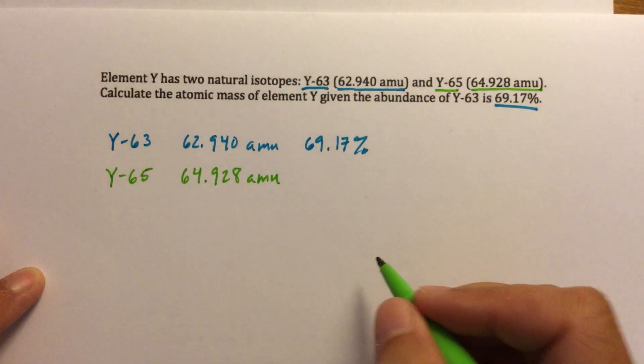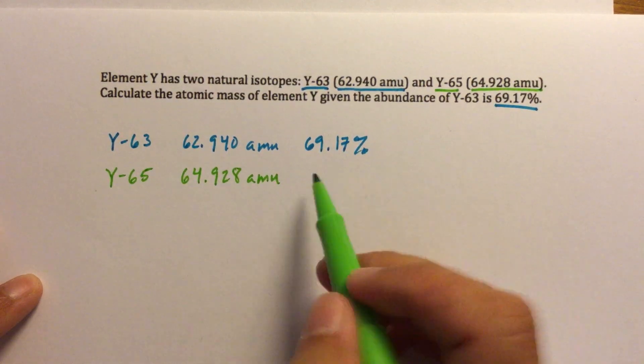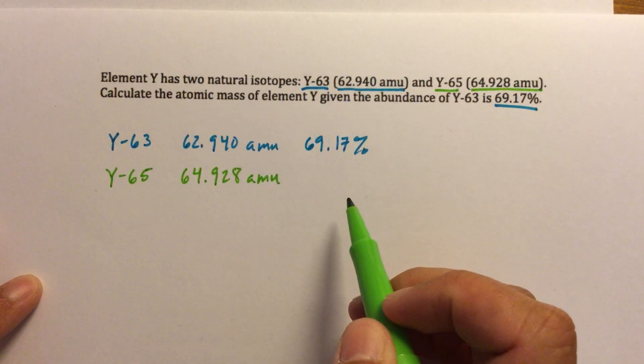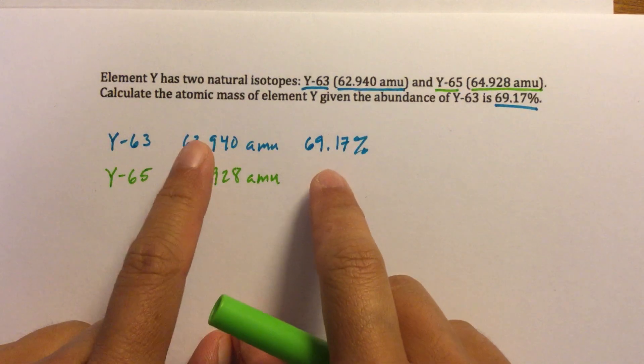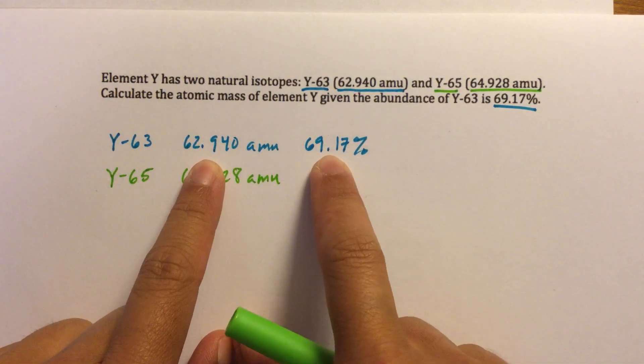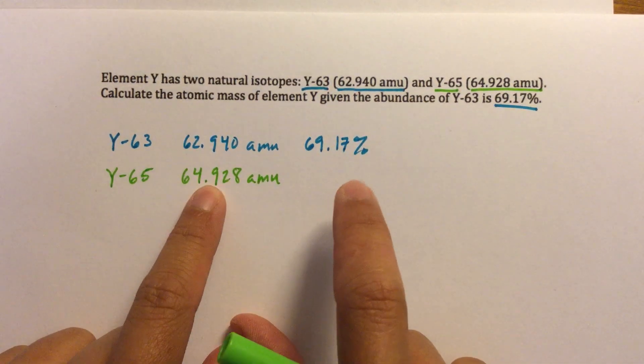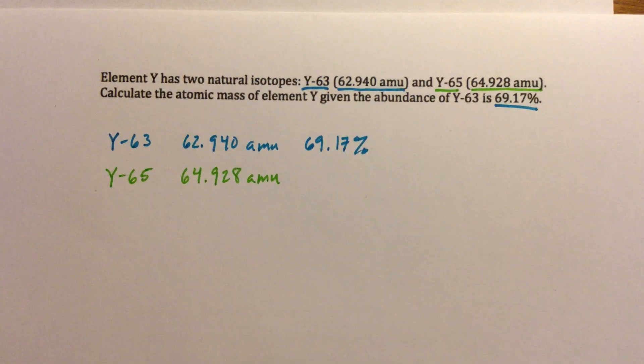And here's the problem that we run into. What is the percent abundance of Y-65? We know that we need to plug that number into our equation. We usually do the mass times the percentage as a decimal, plus the mass times the percentage as a decimal. We add those together, and we get a weighted average, which is our atomic mass. But we have the issue here that we are missing a percentage problem, or maybe not.